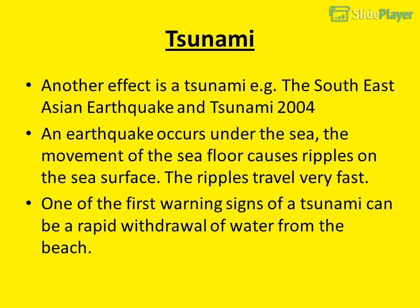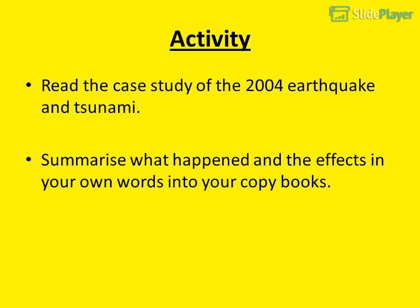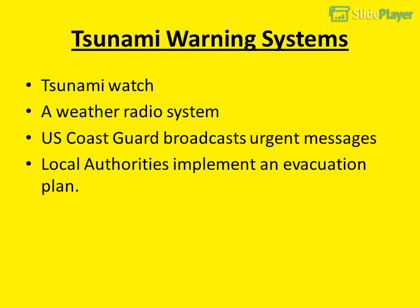Another effect is a tsunami — for example, the Southeast Asian earthquake and tsunami of 2004. An earthquake occurs under the sea; the movement of the seafloor causes ripples on the sea surface which travel very fast. One of the first warning signs of a tsunami can be a rapid withdrawal of water from the beach. Activity: read the case study of the 2004 earthquake and tsunami and summarize what happened and its effects in your own words.